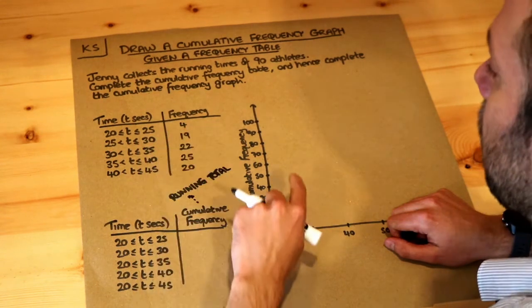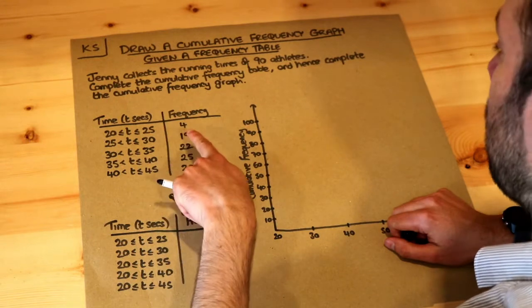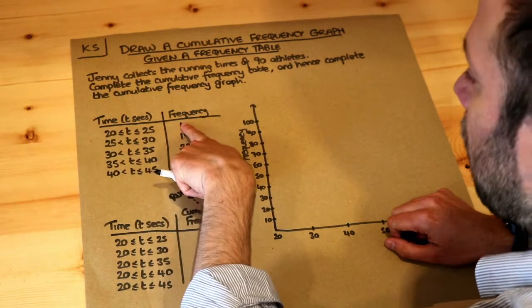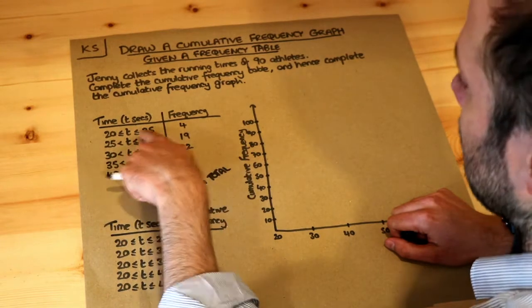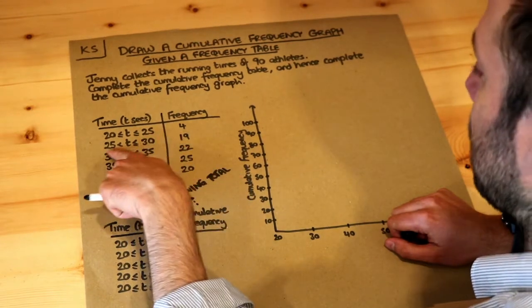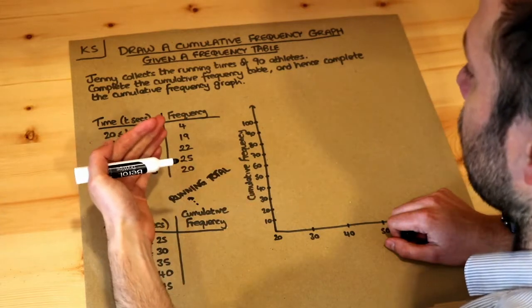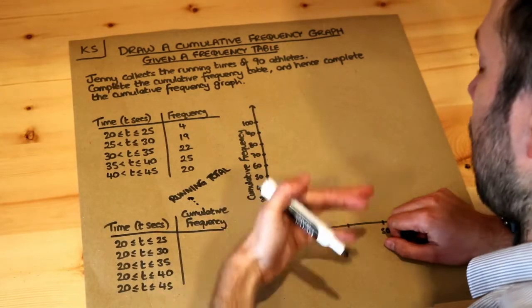So for example if we have some grouped frequency table we've got 90 athletes in total and these are their times. We've got four athletes with times between 20 and 25, 19 athletes between 25 and 30. We might just want to know what's the running total of athletes up to a particular time.